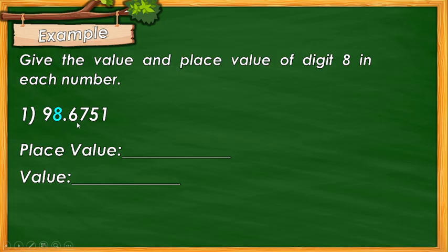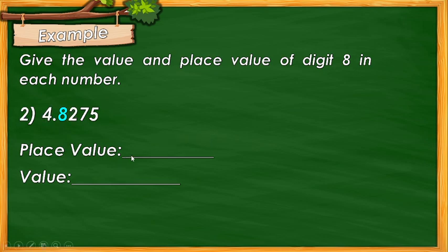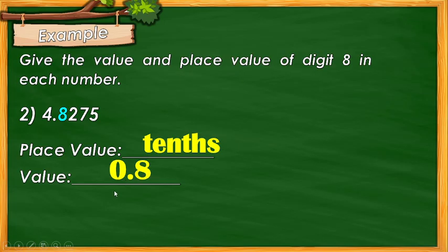Example number 1: 98.6751. What is the place value of digit 8? Correct — the answer is ones place, so the value of 8 is 8 because it's in the ones place. Example number 2: 4.8275. What is the place value of digit 8? Correct — the answer is tenths place. Since the place value of digit 8 is in the tenths place, the value is 0.8, or 8 tenths.